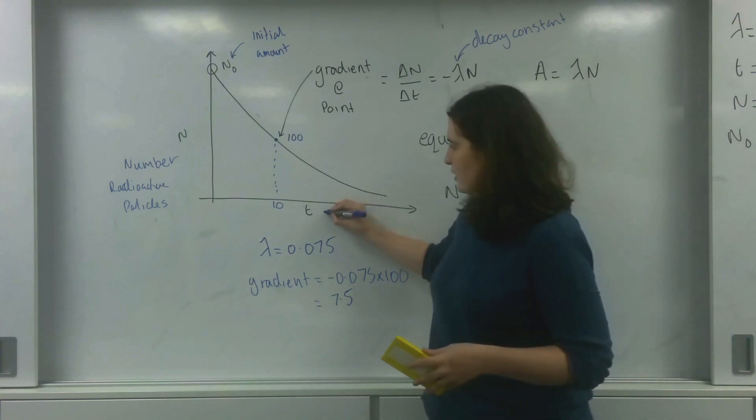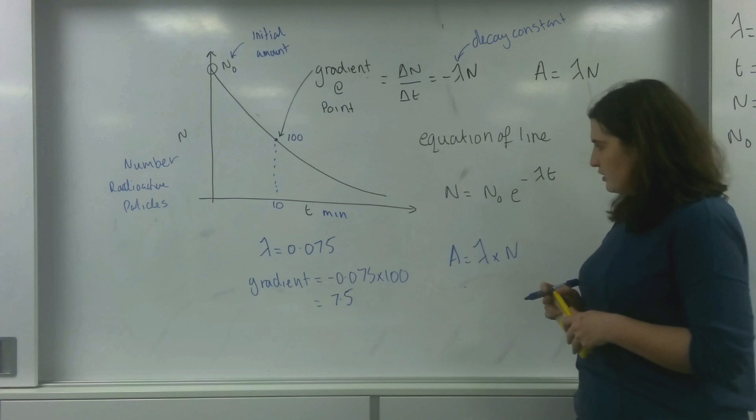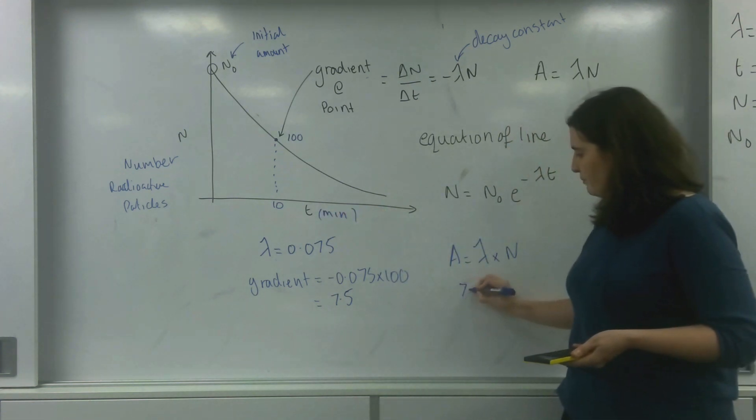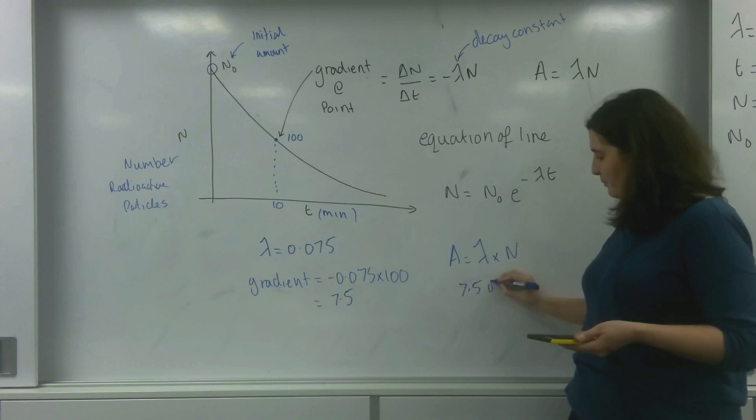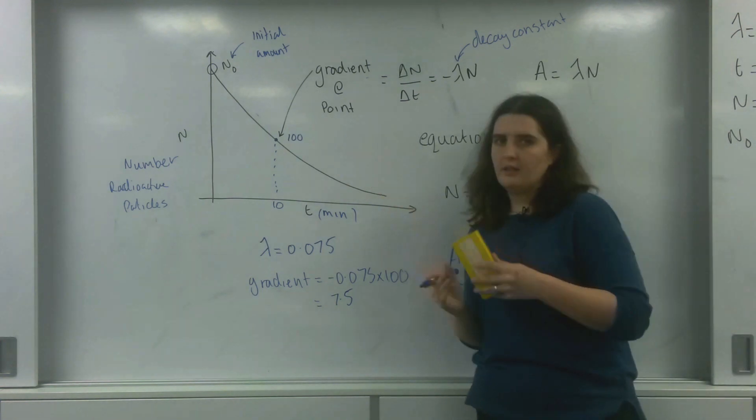So for example, this time is going to be in minutes. So this activity would be 7.5 decays per minute at that point in the equation.